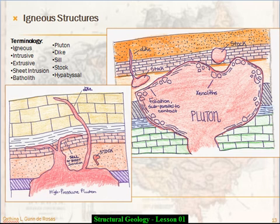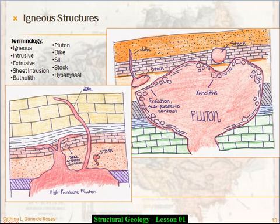Batholiths are huge, plutons are smaller, and stalks are even smaller. Even a stalk — this little blob up here — is defined as being just a couple kilometers in diameter, so these are all really large. And then there's the word 'hypabyssal,' which just means these are more shallow injections. A shallower stalk or pluton in the crust is going to freeze a lot faster, its level of crystallization will be lower, and it will have different structures associated with it.